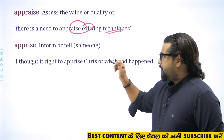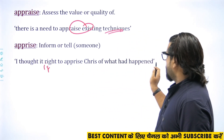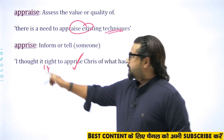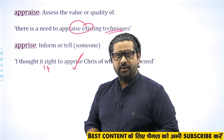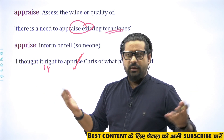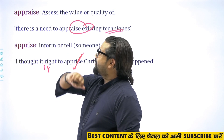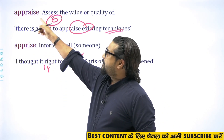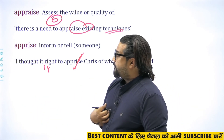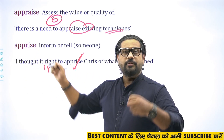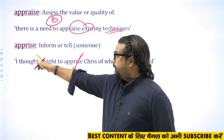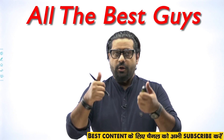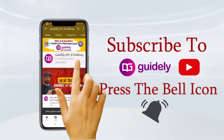'Apprise' means to inform or update somebody. Example: 'I thought it right to apprise Chris of what had happened' — meaning to inform or update Chris. So 'appraise' is about assessment or appraisal, while 'apprise' is about giving an update or informing someone.